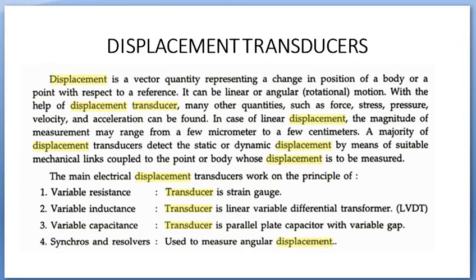For linear displacement, the magnitude of the measurement may range from a few micrometers to a few centimeters. The majority of displacement transducers will detect static or dynamic displacement by means of suitable mechanical links coupled to the point or body whose displacement is to be measured. These mechanical links or gear mechanism arrangements must be attached to the transducer so it can sense and pass the signal to the next part.